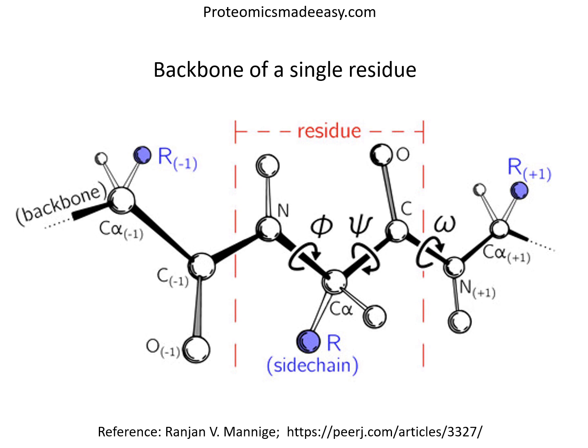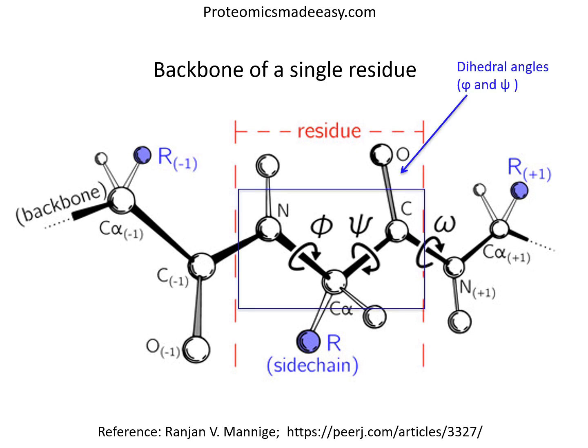The conformation of a peptide backbone is dependent on a number of parameters such as bond lengths, bond angles, and dihedral angles. A dihedral angle is the angle between two intersecting planes — in chemistry, it is the angle between planes through two sets of three atoms having two atoms in common. As you see in the figure, phi is between C-alpha and N, and psi is between C-alpha and C.